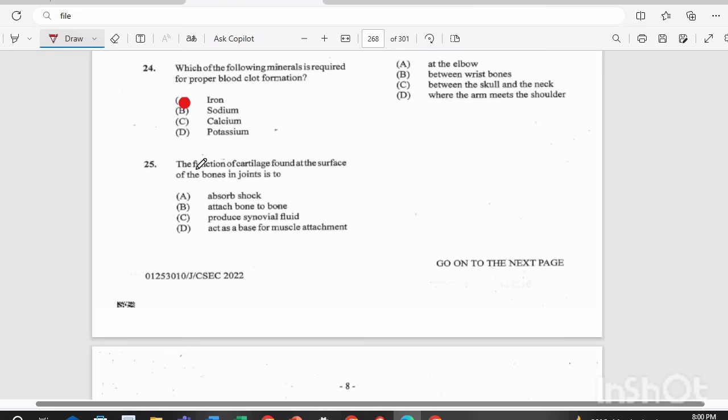Question 25. The function of cartilage found on the surface of the bones in joints is to A, absorb shock, B, attach bone to bone, C, produce synovial fluid, or D, act as a base for muscle attachment? The answer there is A, absorb shock.